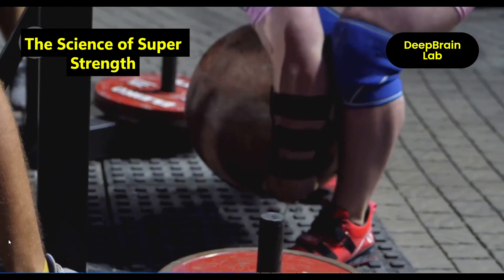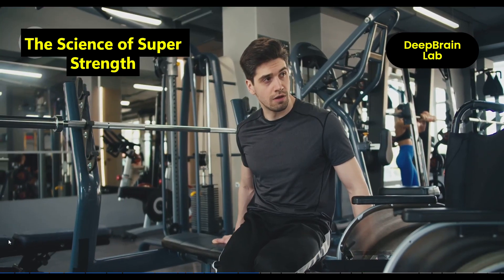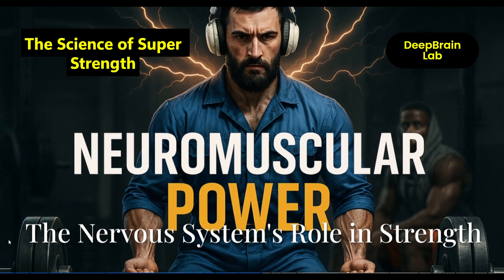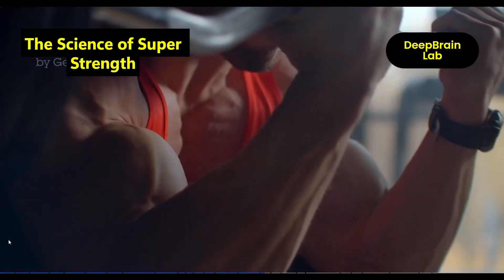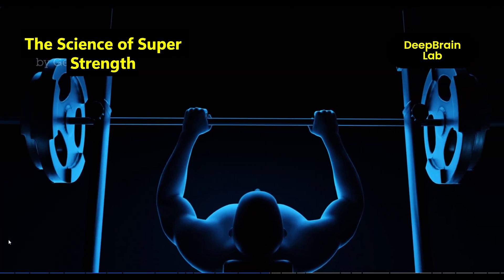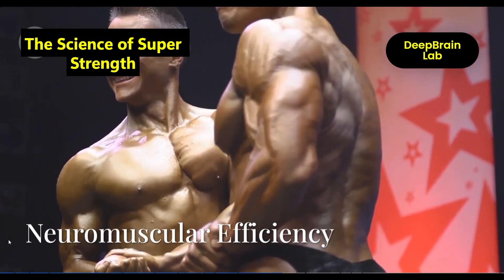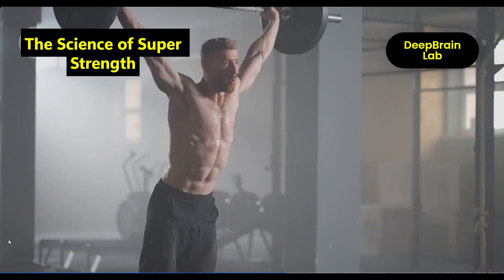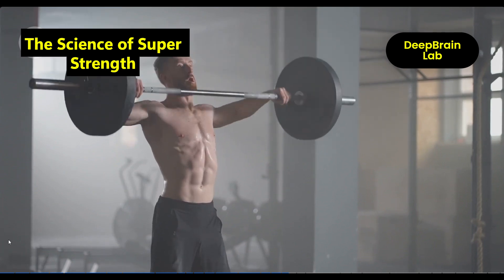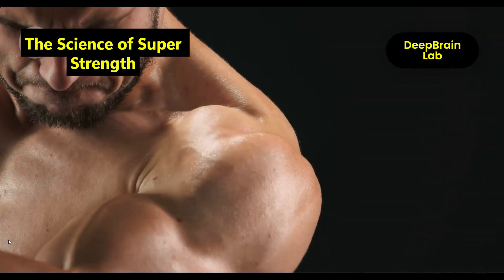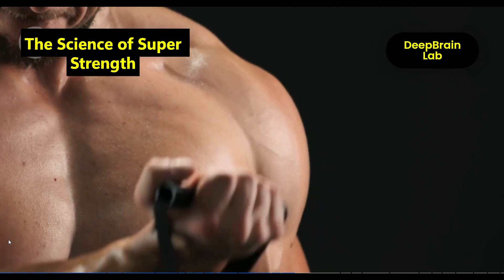They rely on what we'll explore next: Nervous System—the Hidden Strength Engine. Muscles are just the hardware, but the real secret weapon is the software: your nervous system. Even if two people have the same muscle size, the one with better neuromuscular efficiency can lift more. That's because their brain sends faster, more powerful signals to activate more muscle fibers at once.